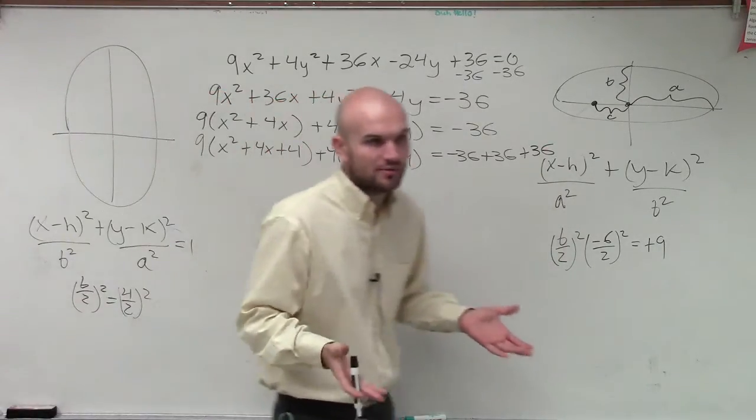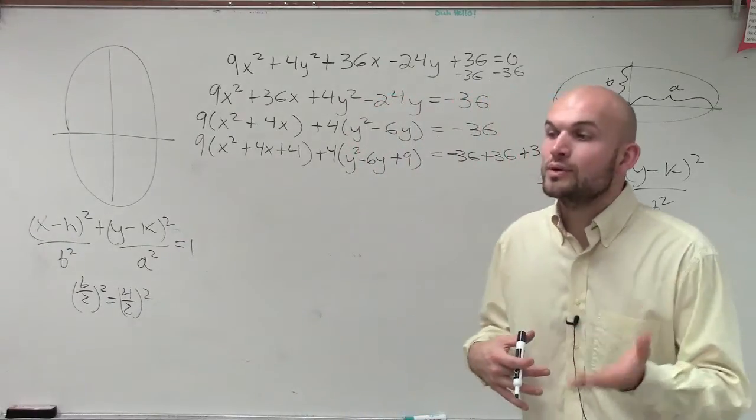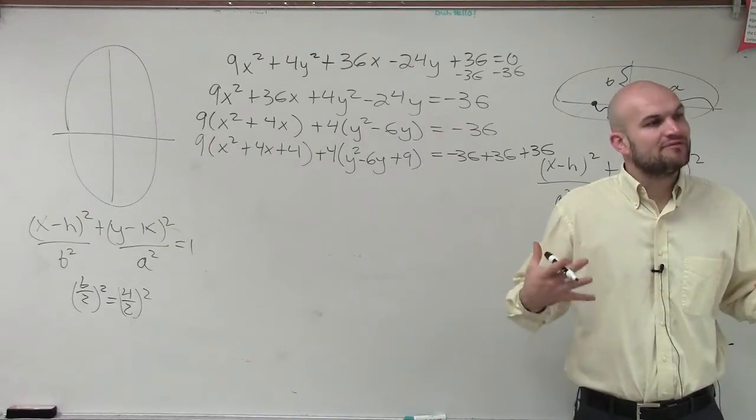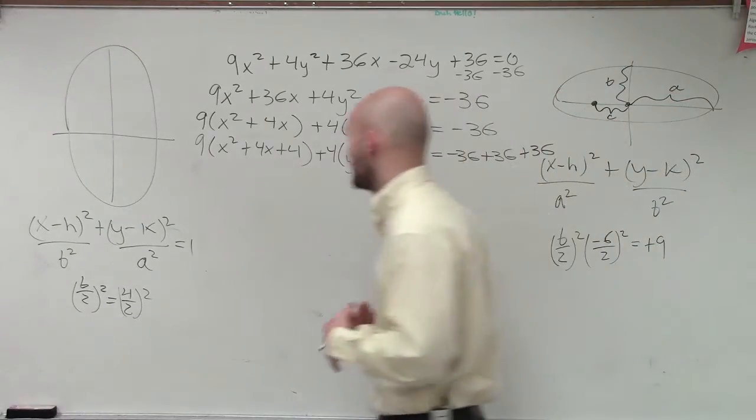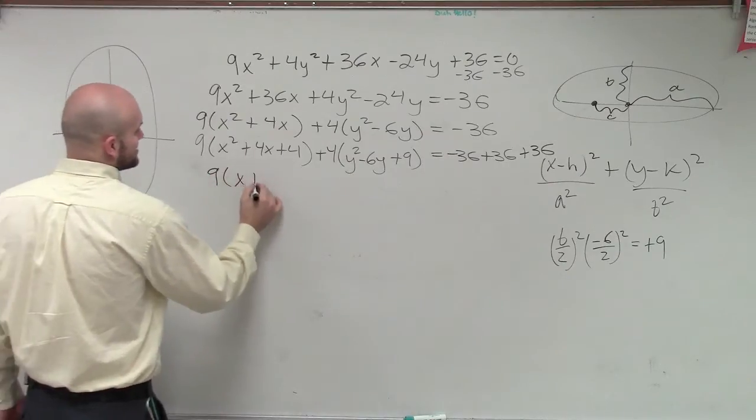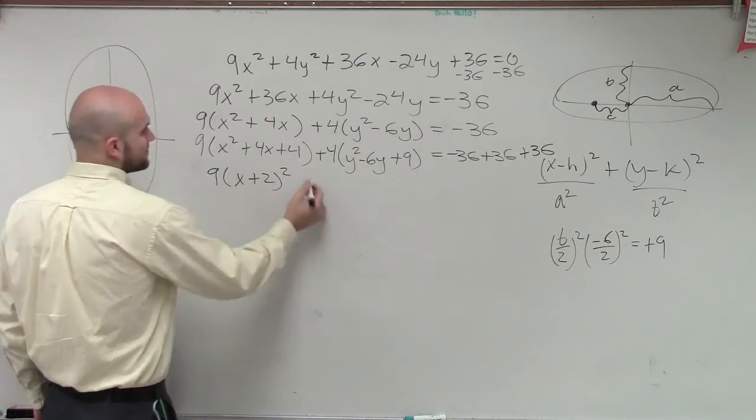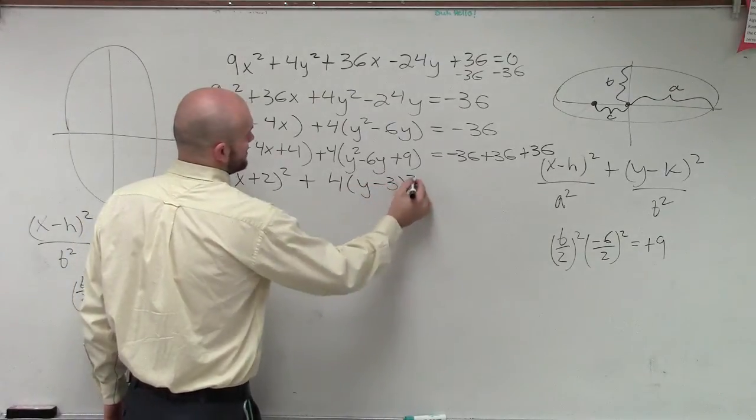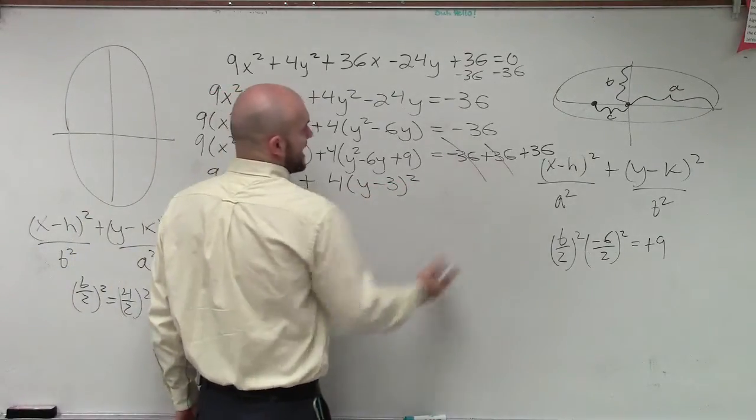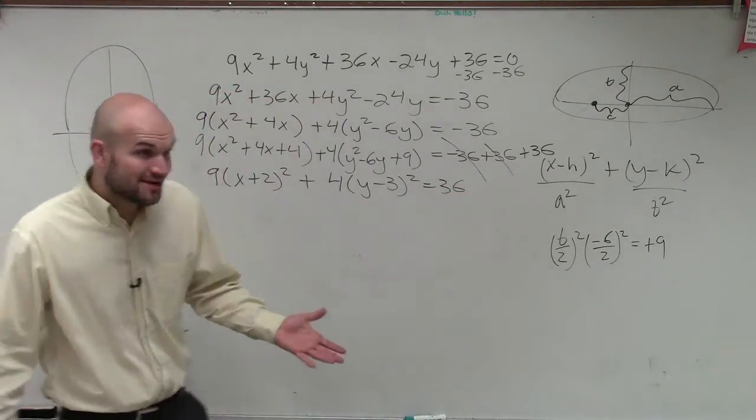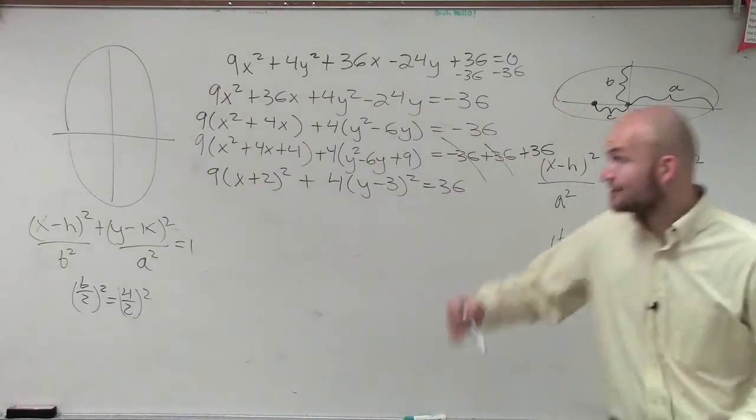The whole reason why we complete a square is we're creating a perfect square trinomial that can be factored down into a binomial squared. So when I factor these down, I now get 9(x + 2)² + 4(y - 3)² = 36. You guys kind of see how it's starting to transform?